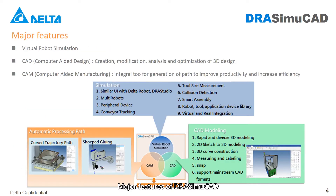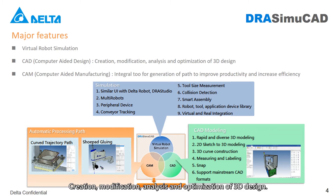Major features of DIA Simu CAD are as follows. First, virtual robot simulation. Second, computer aided design — including creation, modification, analysis, and optimization of 3D design. Third, computer aided manufacturing.